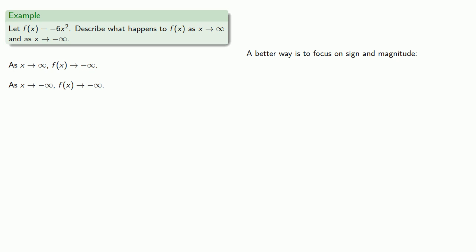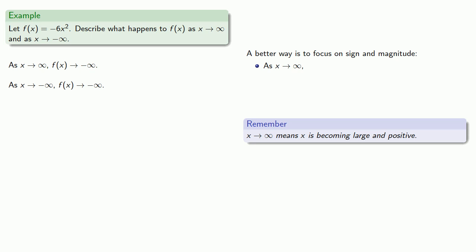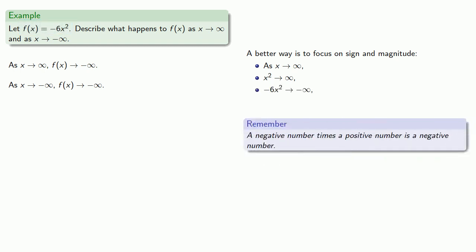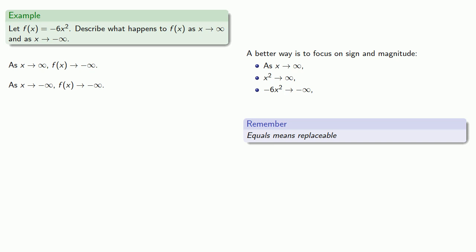A better way is to focus on the sign — positive or negative — and the magnitude — small or large. As x → ∞, x is becoming large and positive, so x² also goes to infinity, because the square of a large number is a large number, and the square of a positive number is a positive number. Now we want to know what happens to −6x²: that goes to −∞, because a negative number times a positive number is a negative number. And since f(x) = −6x², equals means replaceable, so f(x) → −∞.